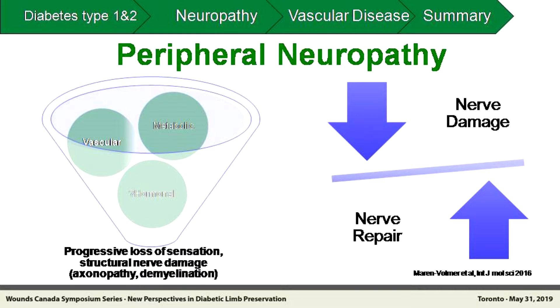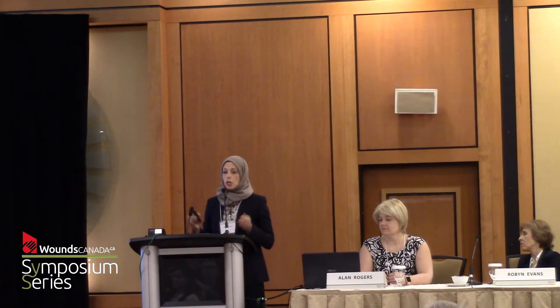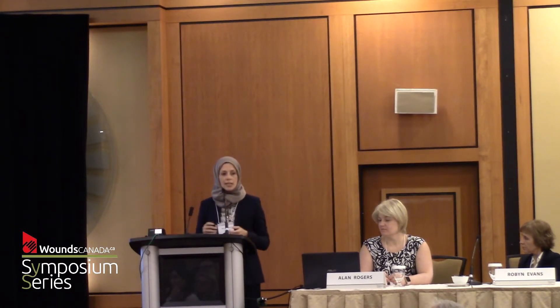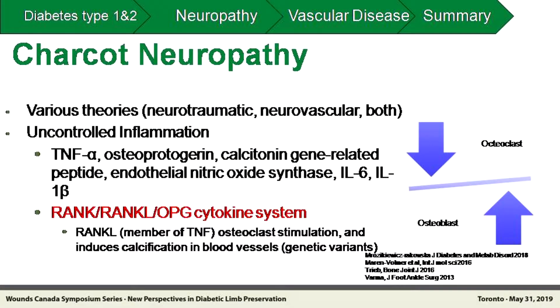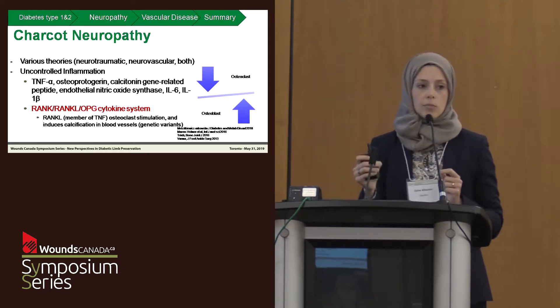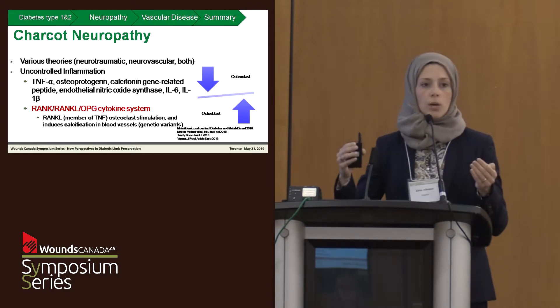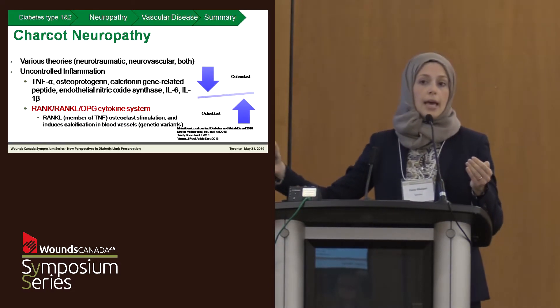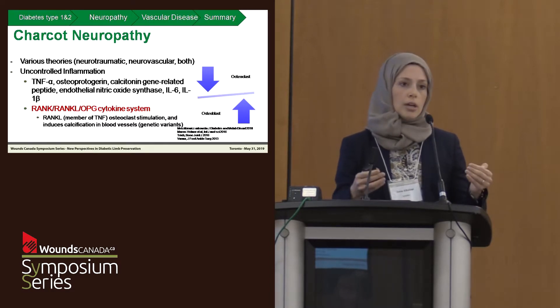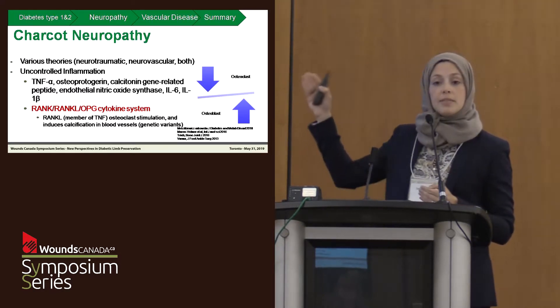Charcot neuropathy is another subtype, and we need to be cautious about generalizing pathogenesis across all neuropathies — it's quite heterogeneous. Previous theories proposed a combination of neuro-traumatic and neurovascular components. But recent work highlights the RANKL/OPG (osteoproteogerin) pathway. RANKL, a member of the TNF superfamily, stimulates osteoclasts which destroy bone. OPG is the antagonist, and there is an imbalance specifically in Charcot foot. This has led to the emerging concept of using bisphosphonates and other treatments to specifically target this pathway.